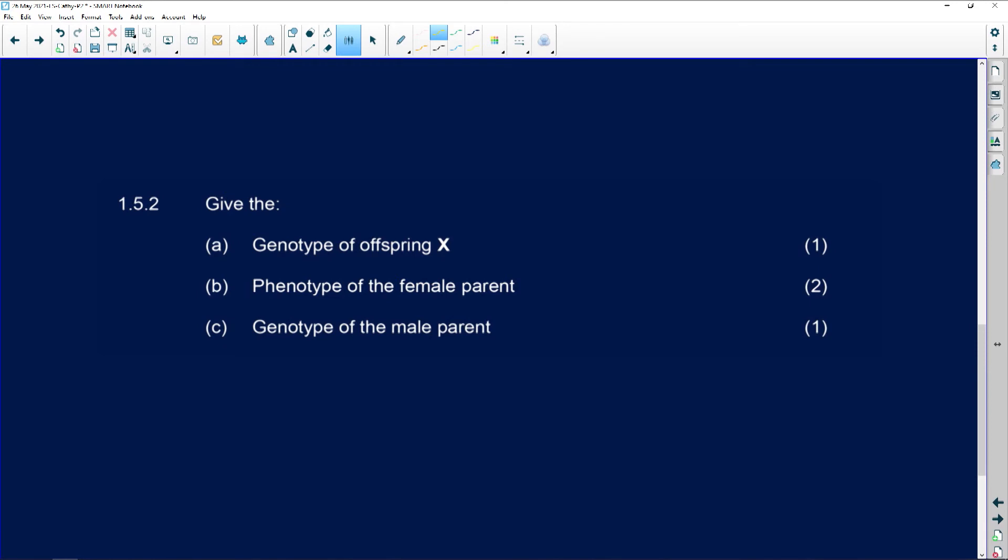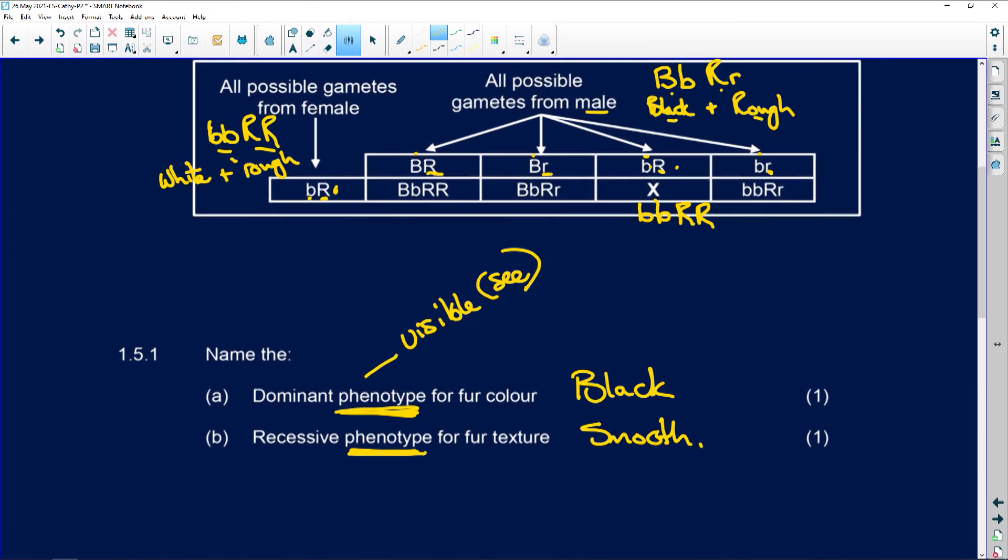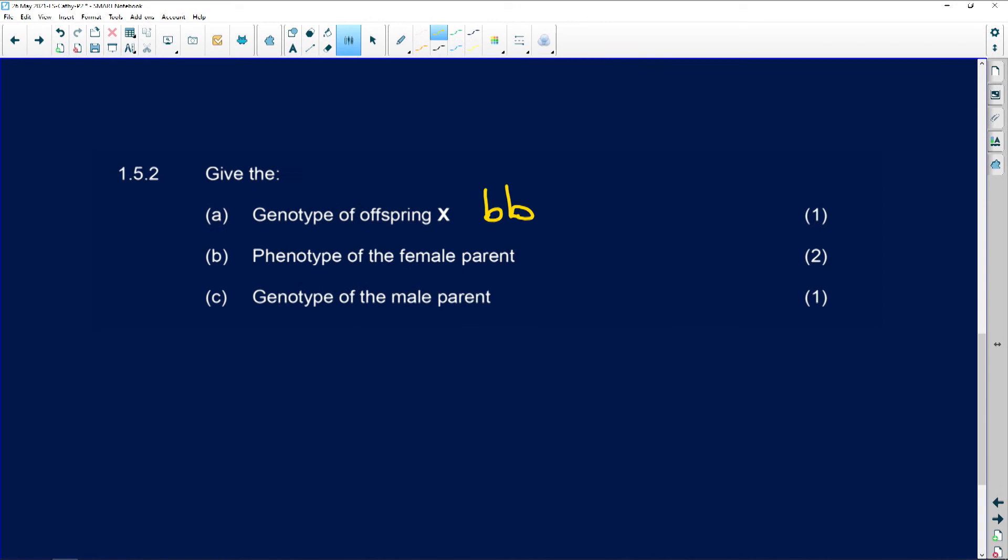So here, give the genotype of offspring X. Well, I remember it was lowercase b, lowercase b, so homozygous, homozygous. And it was, I can't remember... and capital R, capital R, like the mommy, the female cat. So you see, there's the genotype. Here's the phenotype of the female parent. Now she was the same, so that was white fur and rough texture. So white and rough, the same as offspring X.